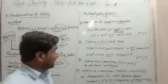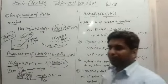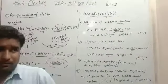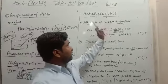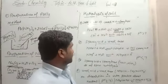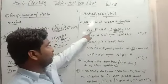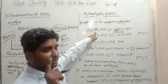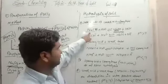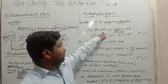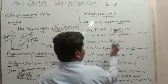Now the next topic is hydrolysis of salts. There are overall four types of salt. The first type is salt prepared by a weak acid and strong base — like NaCN. NaCN is prepared from NaOH and HCN; HCN is the weak acid and NaOH is the strong base. When NaCN undergoes hydrolysis, it gets converted into NaOH plus HCN.